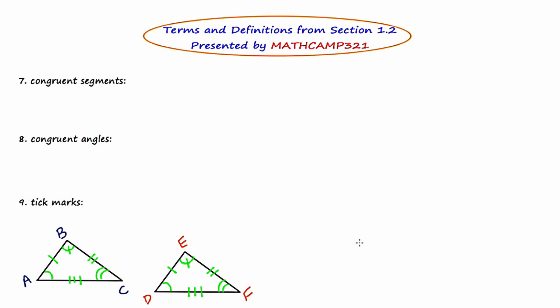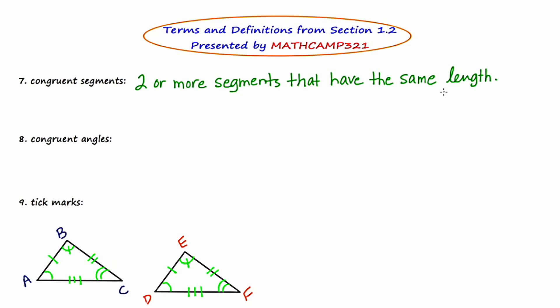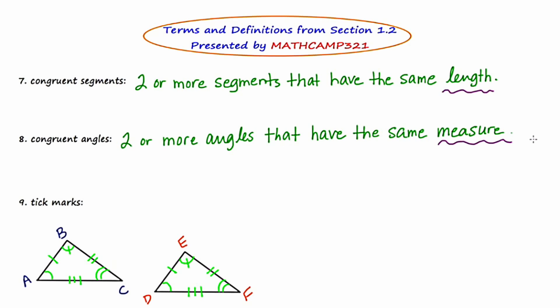Our seventh term is congruent segments. Congruent segments are two or more segments that have the same length — the keyword here is length. We're going to contrast that with term number eight: congruent angles. Congruent angles are two or more angles that have the same measure. When describing congruent segments we talk about their lengths being the same; when talking about congruent angles we talk about their measurements being the same.